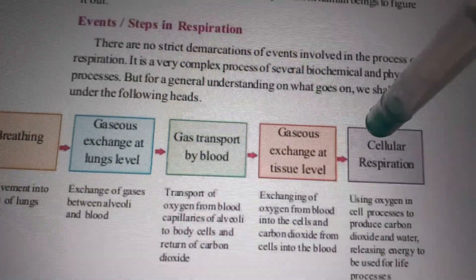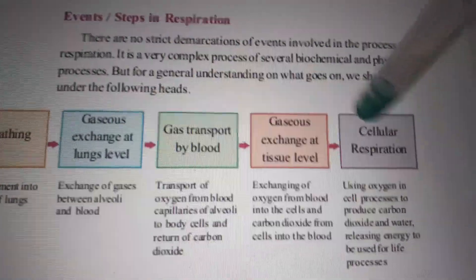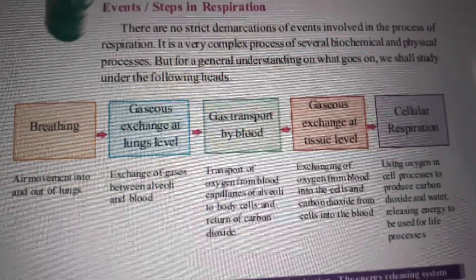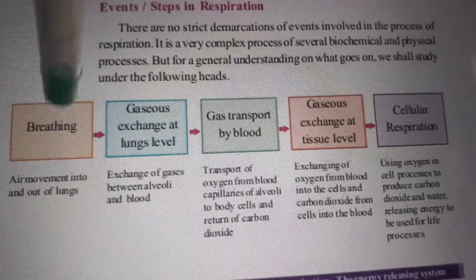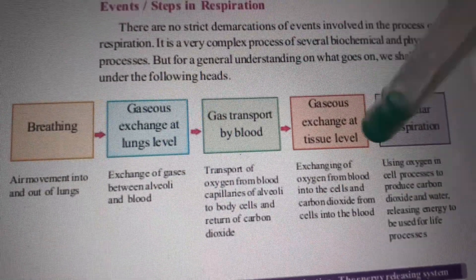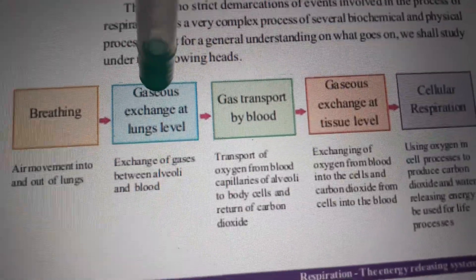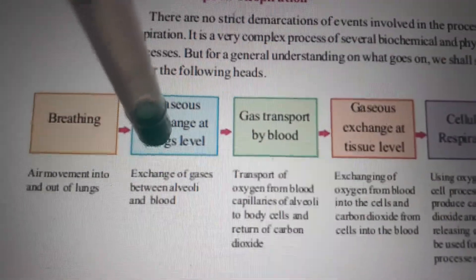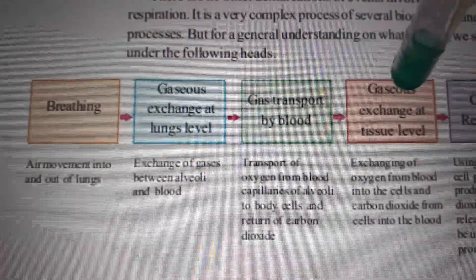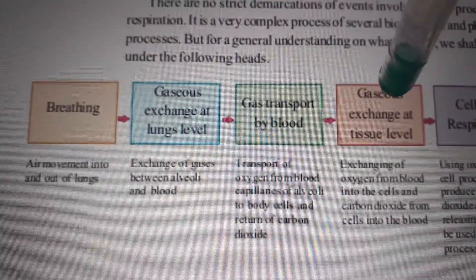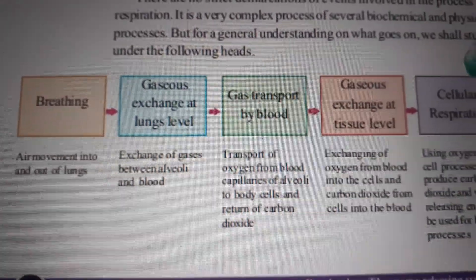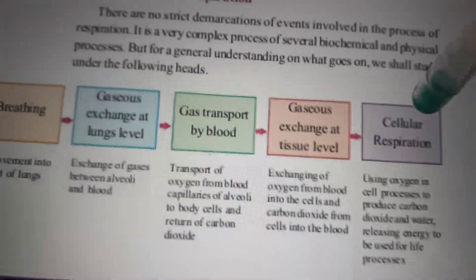That is the final step of respiration. Let us conclude — how many steps are included in the respiration process? The first is breathing. The second is gaseous exchange between blood and lungs. The third step is gaseous exchange between blood and tissues. And the final step is cellular respiration.